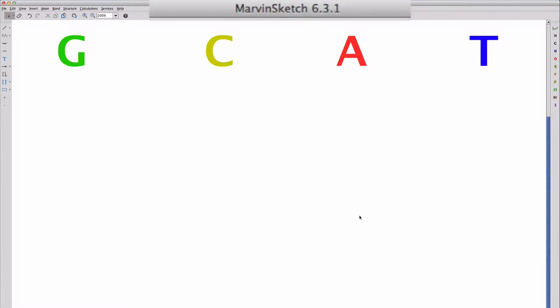Here we're going to use the program MarvinSketch to look at the structures of the nucleobases found in DNA. We'll also see that MarvinSketch can provide information about properties like hydrogen bonding, which atoms in the nucleobases are hydrogen bond donors and which are hydrogen bond acceptors.